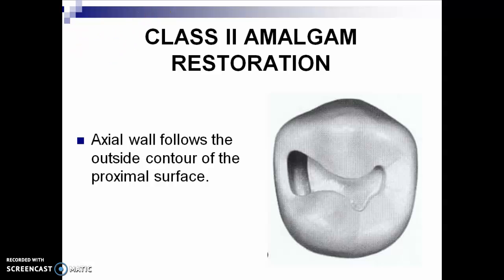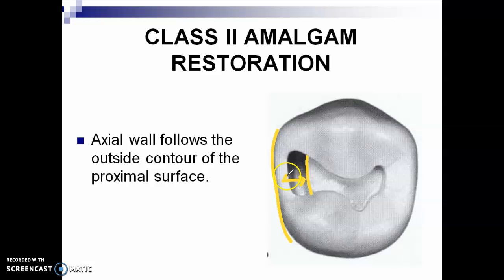The axial wall follows the contour of the proximal surface, for you to have a uniform width of your gingival floor area.